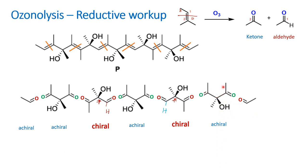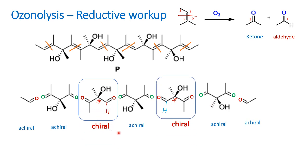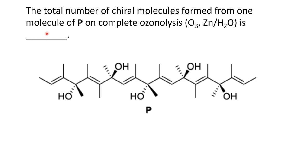The last molecule is like the first molecule — acetaldehyde — which is achiral. So the total number of chiral molecules formed from one molecule of P on complete ozonolysis with Zn/H2O is 2. That is the answer. Hope you understood. Thank you.